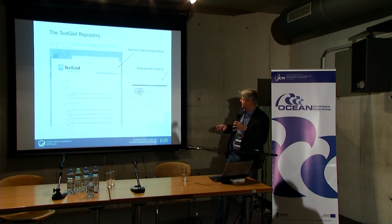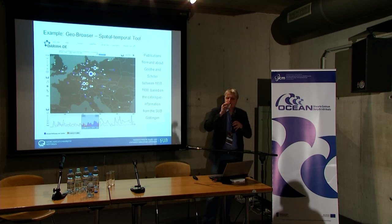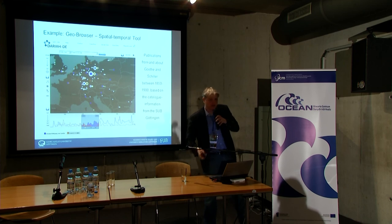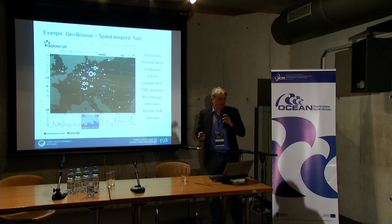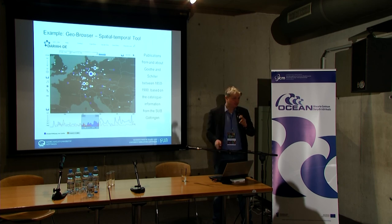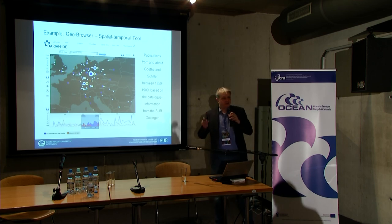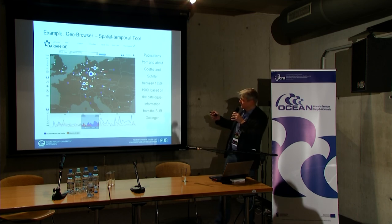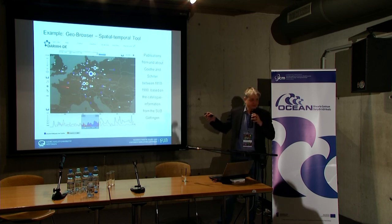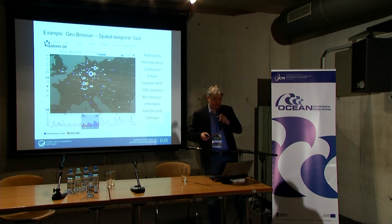Then of course there are repositories, and an additional tool based on that is the geo-browser. The idea is to visualize geographic information based on text — take a text corpus and visualize all the places mentioned in it. One example is looking at the Göttingen library catalogue for all works by or about Schiller and Goethe, then visualizing where those works were published, over time and geographically. It's a nice tool to put geographic information as a visualization of your content.